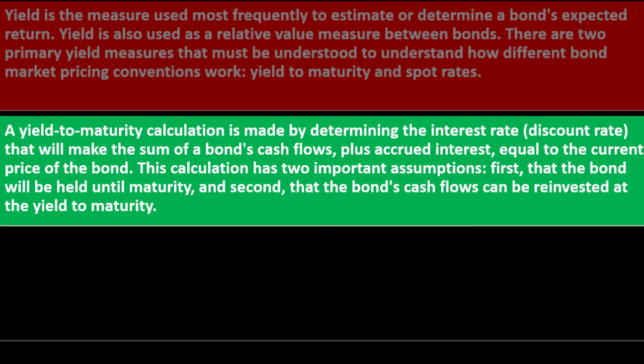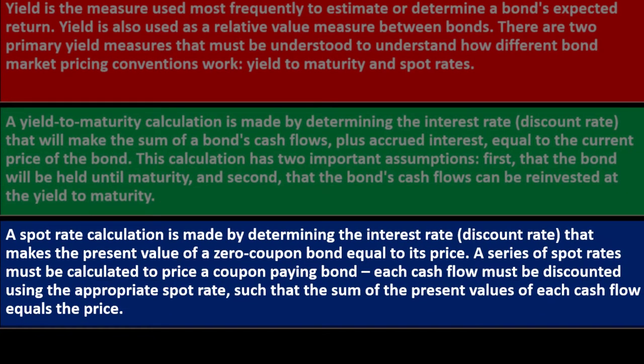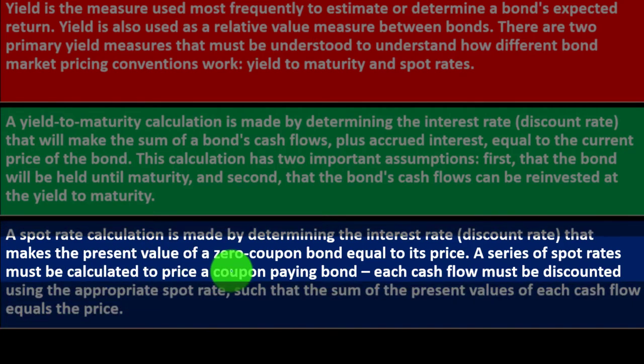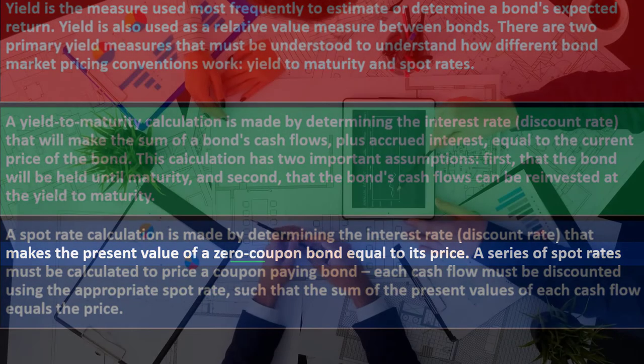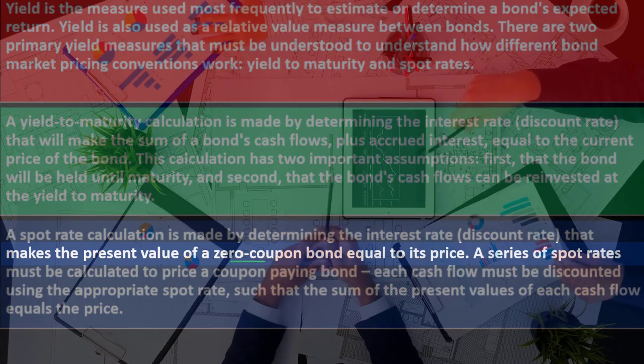A spot rate calculation is made by determining the interest rate (discount rate) that makes the present value of a zero-coupon bond equal to its price. A zero-coupon bond doesn't pay periodic interest — you buy it at a discount and at the end receive the face amount, so the interest is built into the amount received at maturity. A series of spot rates must be calculated to price a coupon-paying bond.